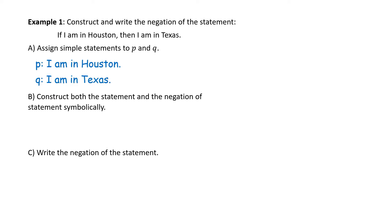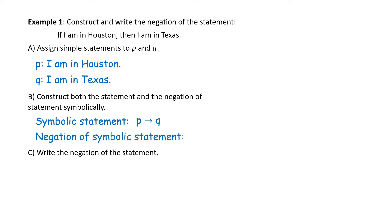Part B — construct both the statement and the negation symbolically. The statement would be if P then Q. Now we need the negation of that symbolic statement, which is the negation of P implies Q. We just learned that definition — that is P and not Q.